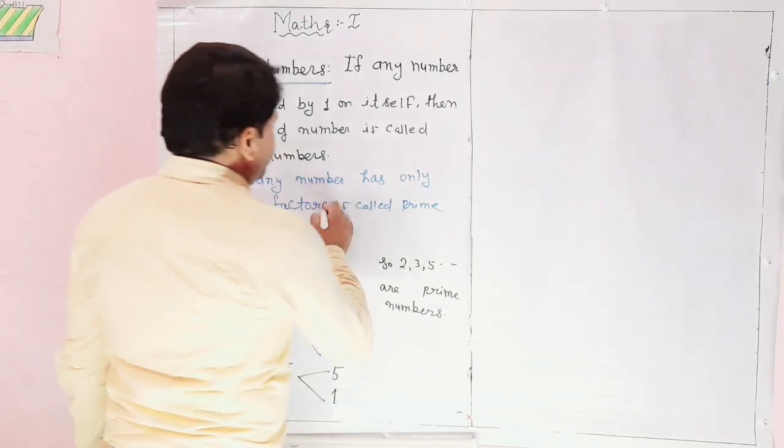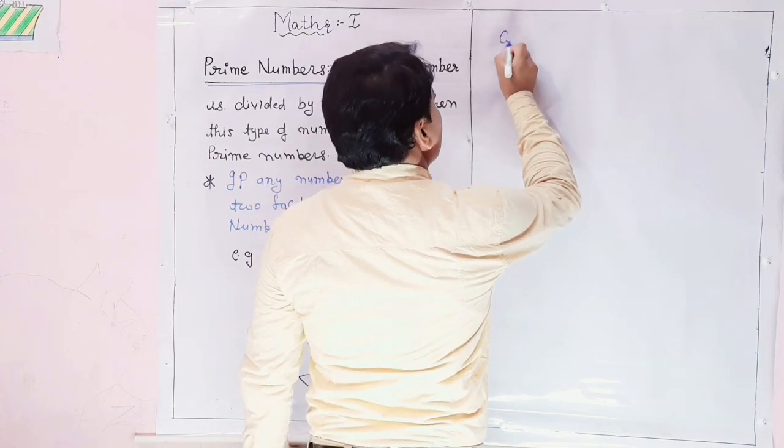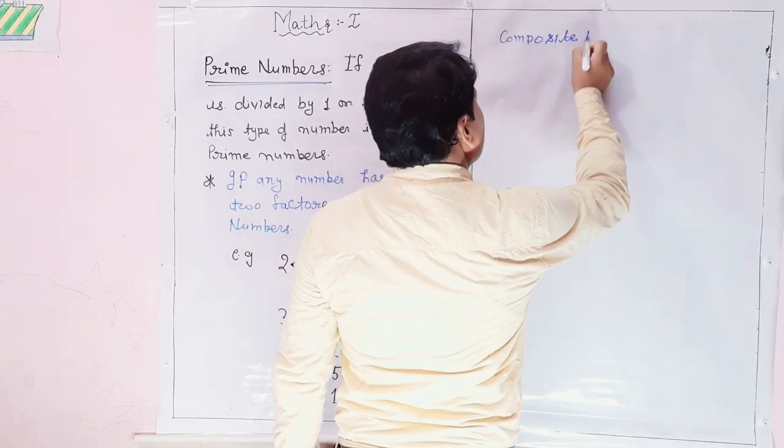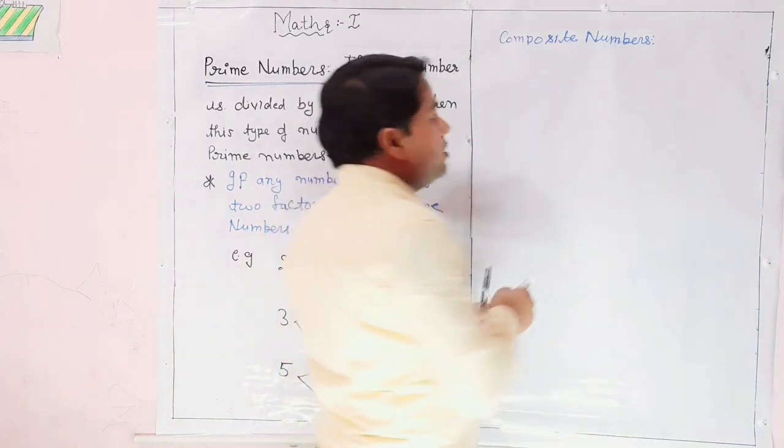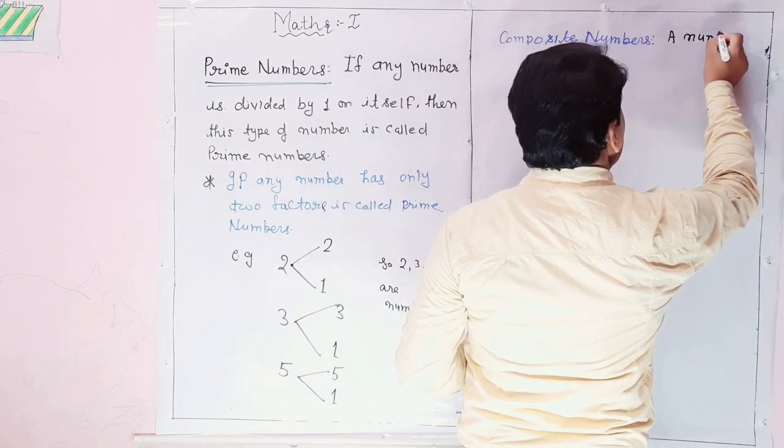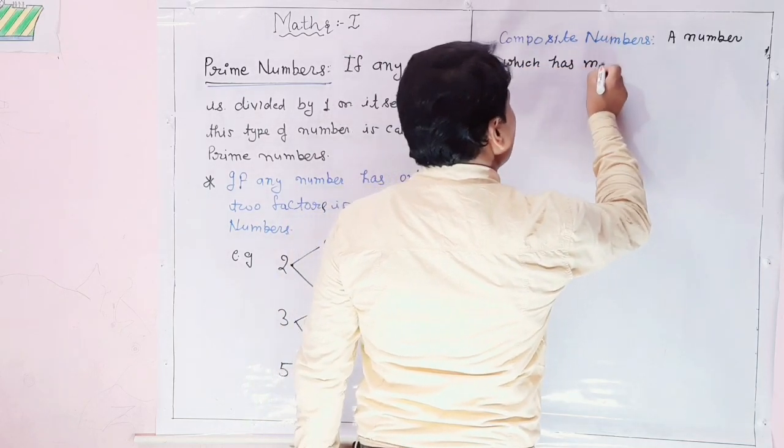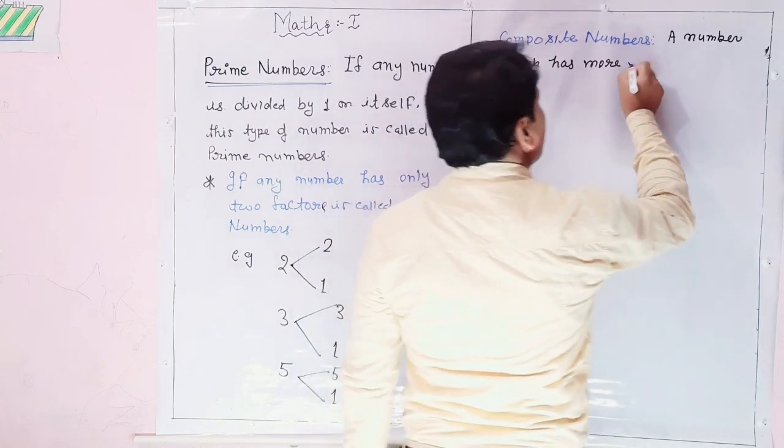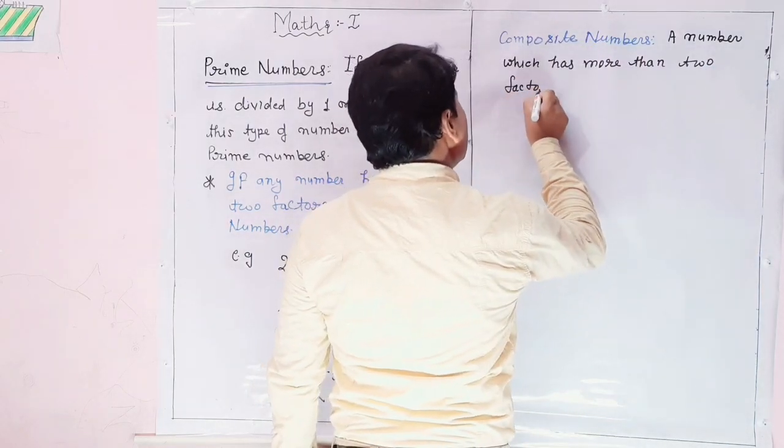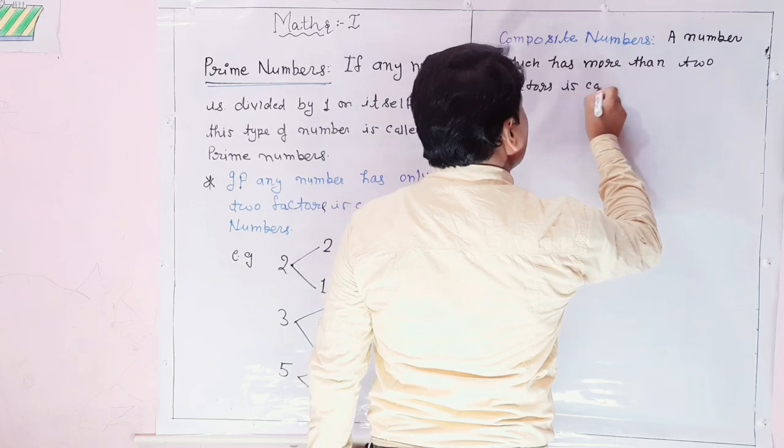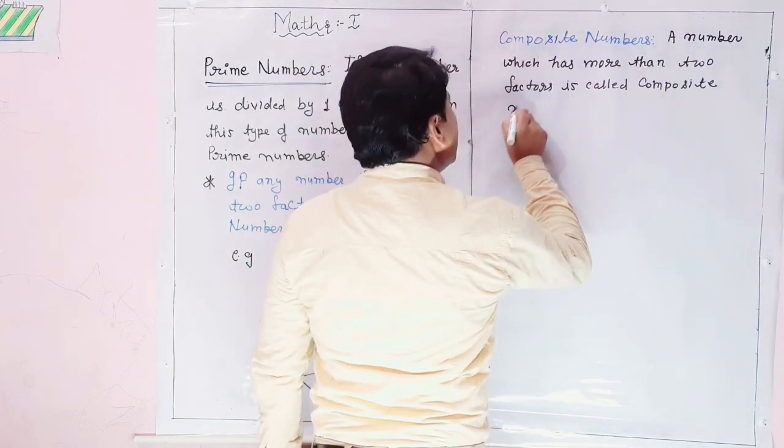Next, let's start. Composite numbers. A number which has more than two factors is called composite numbers.